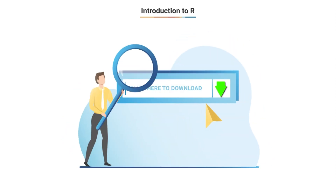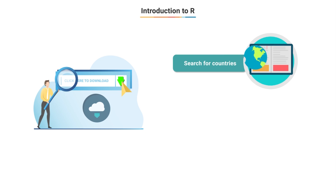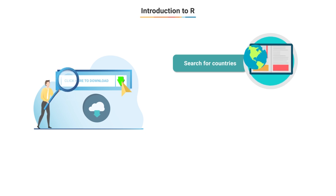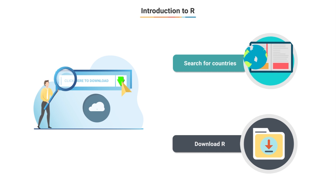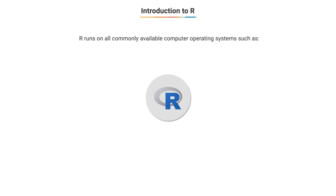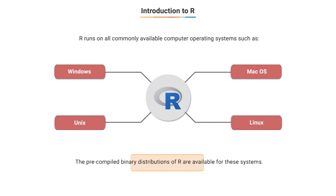By clicking on the relevant page to download, it will list all country names with their corresponding CRAN packages. We can check the link for India as well. We can download the latest version available. R runs under all commonly available operating systems like Windows, Mac OS, Linux, and Unix, and pre-compiled binary distributions of R are available for these systems.